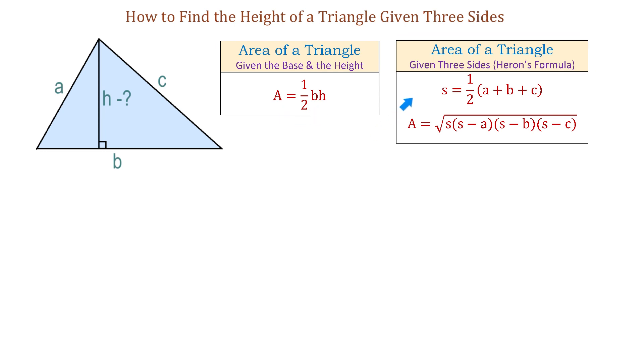The second formula is Heron's formula, and we use it when we know all three sides. With this formula, first we need to find the number s, which is half of the perimeter, and that is one-half times the sum of a, b, and c.